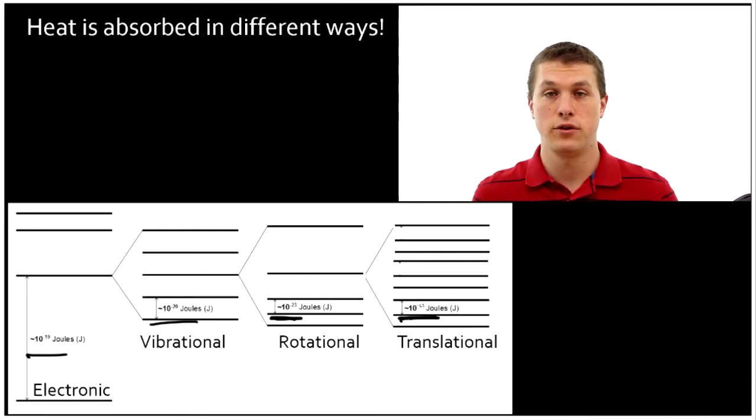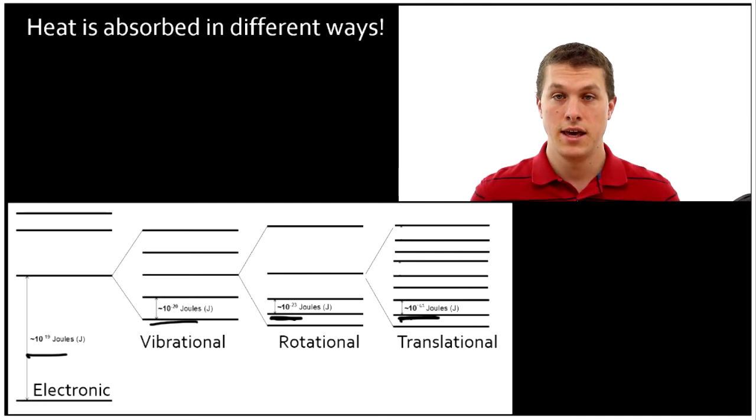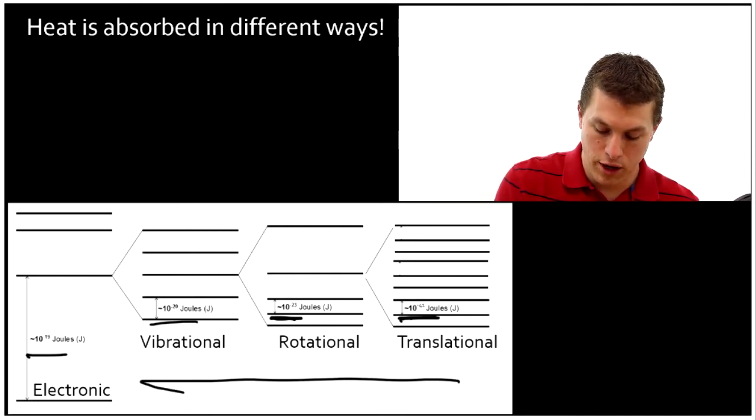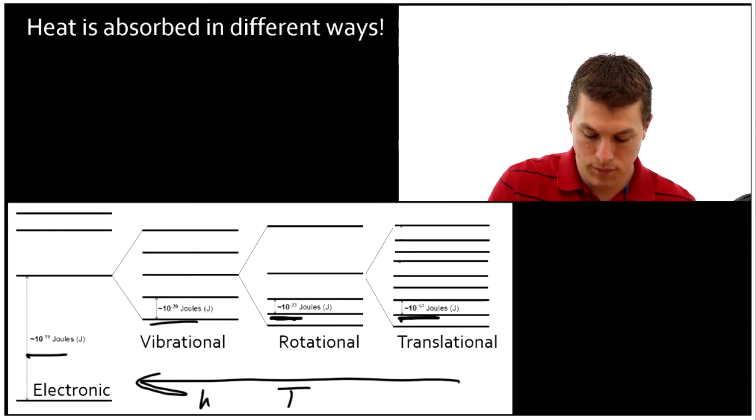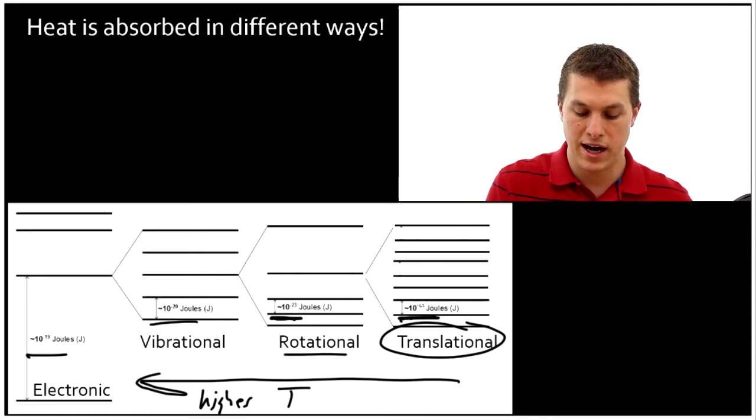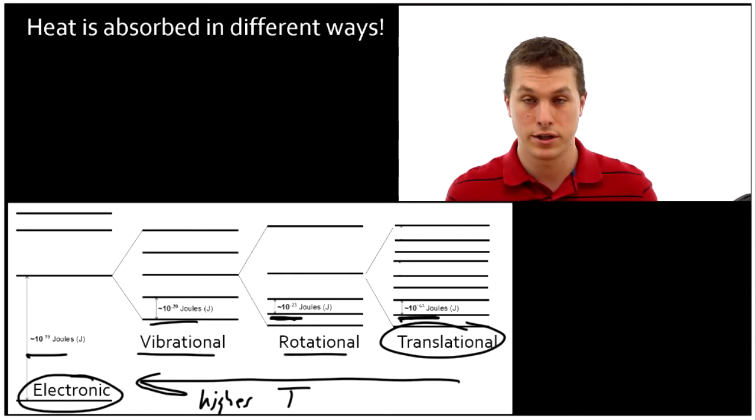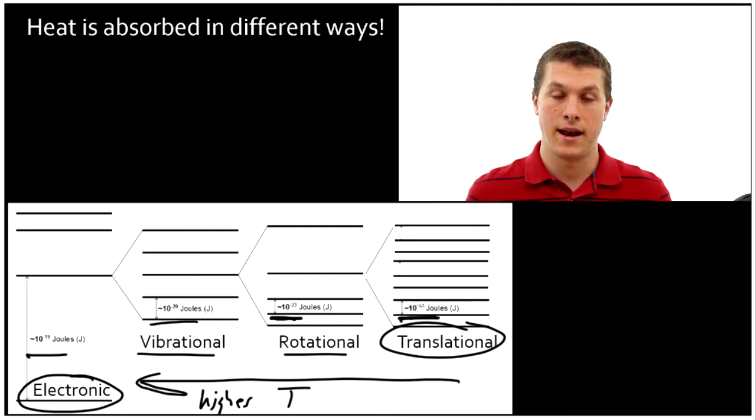So as temperature increases, the different ways our molecule can accept energy changes. Because just like in spectroscopy where we saw that a molecule could only change an energy level if the energy of the photon matched the gap, in heat capacity our molecule can only change energy levels if the energy of our collision between other molecules (that's transferring heat) is equal to those energy gaps. So these become more and more relevant as T increases. At the lowest T's we only need to worry about translational. At slightly higher T's, rotational, higher T's vibrational, and extremely high temperatures electronic. The electronic usually not relevant for a way that a molecule can absorb energy from heat.